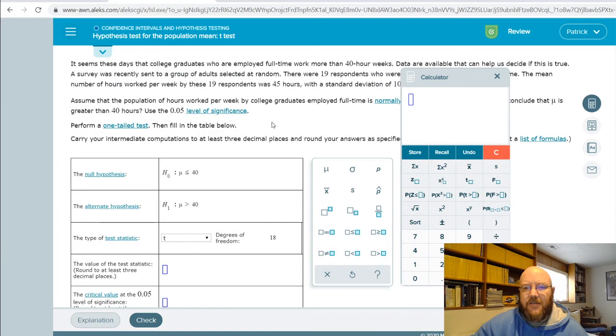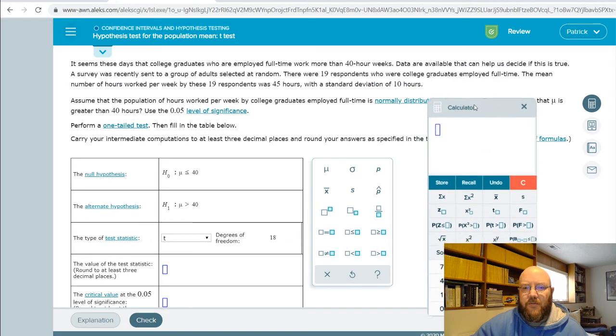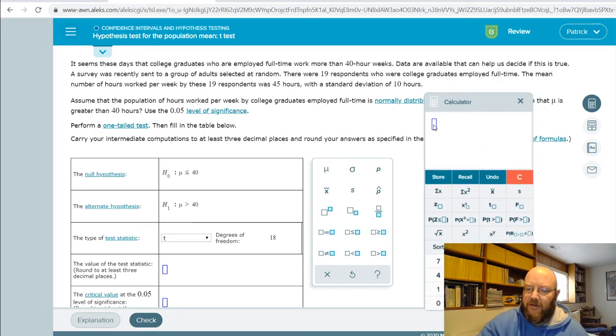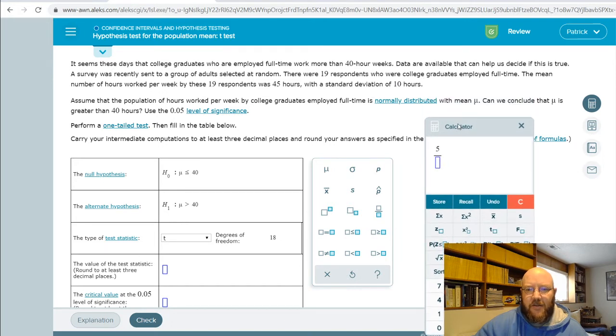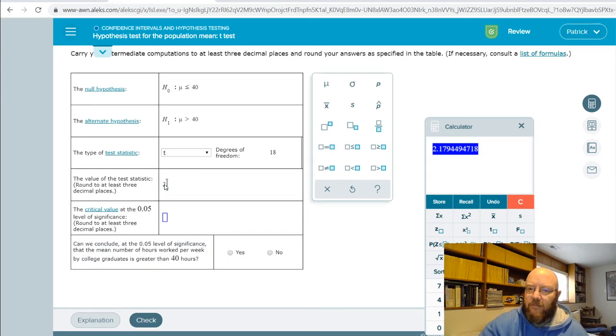And so to calculate it, it's pretty straightforward. We just take our sample mean, 45 minus our population mean, which in this case is 40, which gives us 5. Divide that by our sample standard deviation, which was 10 hours, and divide that again by the square root of our sample size, which is 19. And note this is sample size, not degrees of freedom. So 2.179 is our test statistic.